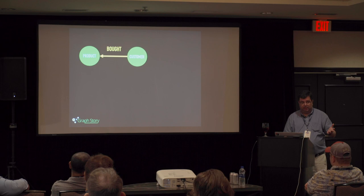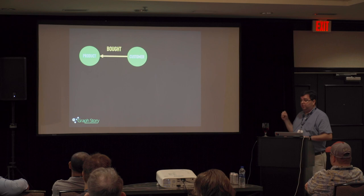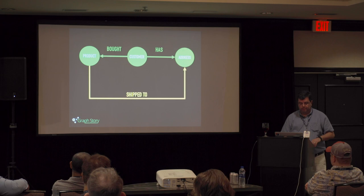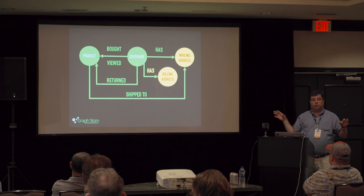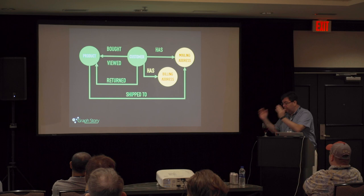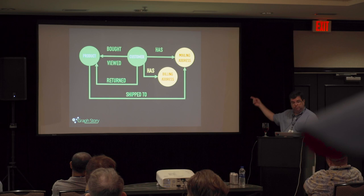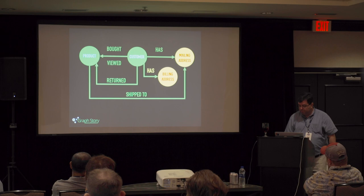You can start with a basic relationship: a customer and a product. Then you can add an address — this product was shipped to this address, a customer viewed another product, they returned a product. Then you split those nodes into different types of address nodes, mailing and billing. In Neo4j and most other graphs, you have a thing called labels. A node can be described as an address one day, and then you can split them into two distinct node types: mailing address and billing address. It's very easy to do, unlike in a relational system.